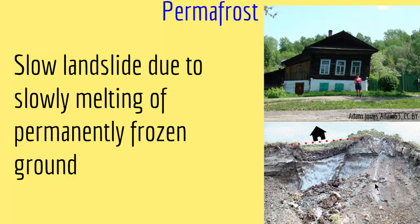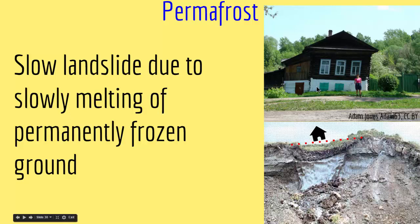The last type of slow mass wasting is permafrost. Permafrost is slow landsliding due to the slow melting of permanently frozen ground. In very cold areas, the ground is usually frozen for 10 out of 12 months of the year, and in the warm months the ground slowly melts, creating landslides. As you can see in this picture, the slope has failed because the frozen material melted, the ground got depressed, and everything on top slowly came down — even deforming a house on the surface. Permafrost is a type of slow movement or slow mass wasting.